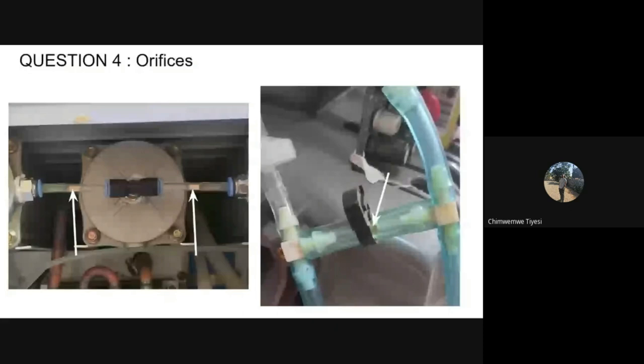A colleague recommends: if you have another current oxygen concentrator available, you can scavenge the tubing with orifices from that concentrator to replace the missing one. Linda adds that the graphic shows the tubing with orifices for the J5 oxygen concentrator on the left, and the tubing with the orifice fitting for the DeVilbiss 515 on the right.